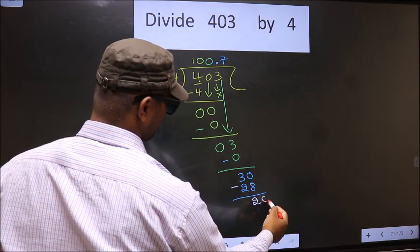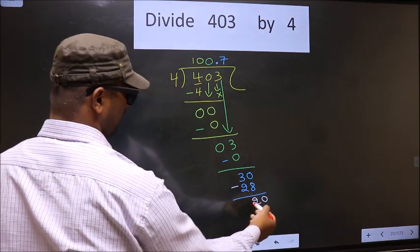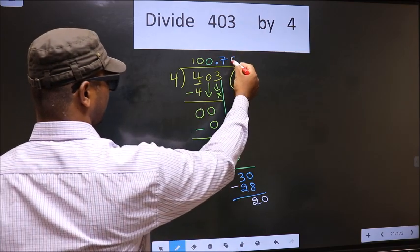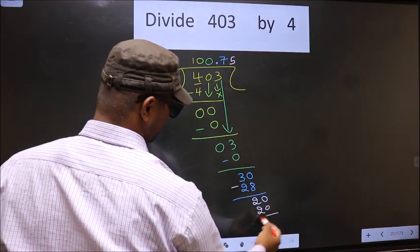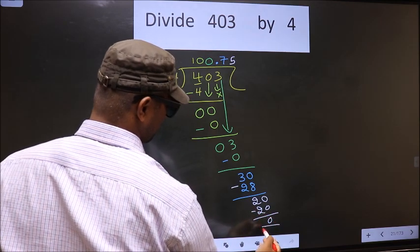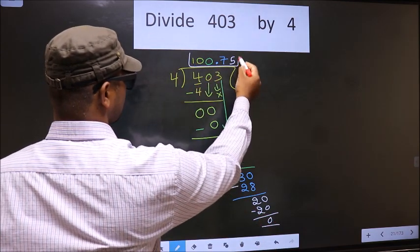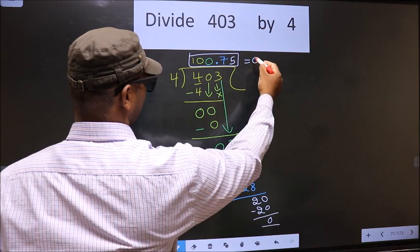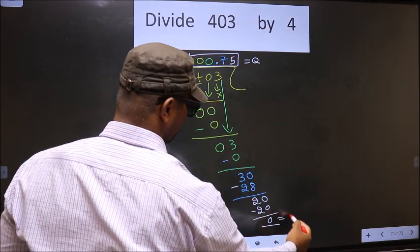Now, you subtract 30 minus 28 is 2. We already have the decimal so you directly take 0. When do we get 20 in 4 table? 4 5 is 20. So, you subtract you get 0. So, this is our quotient and this is our remainder.